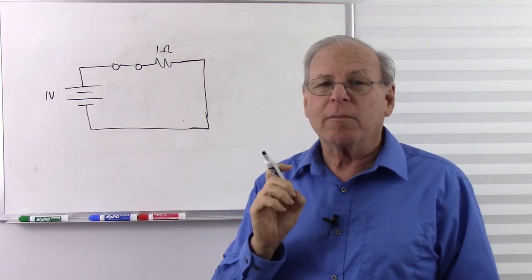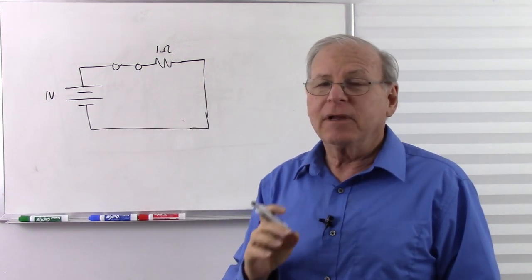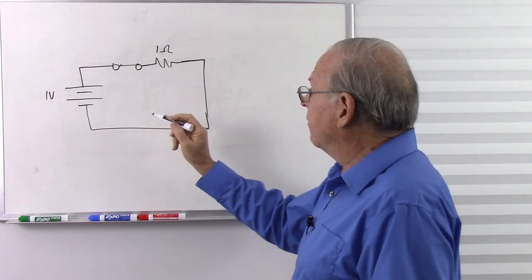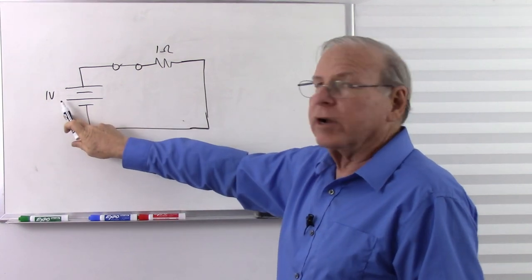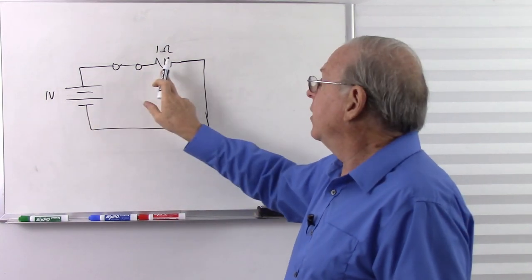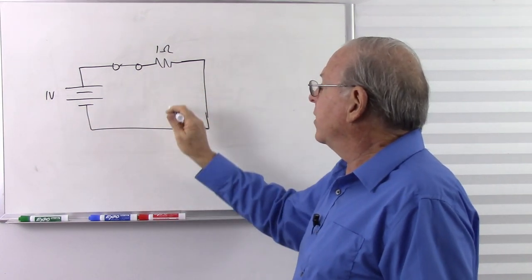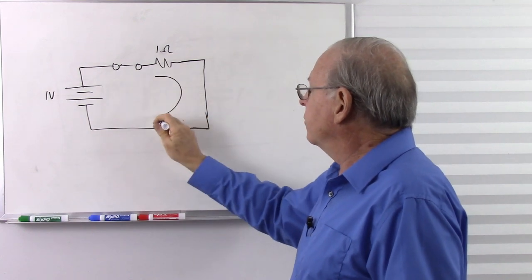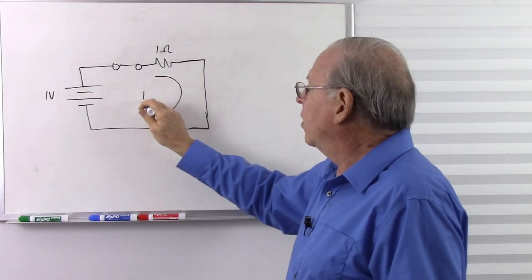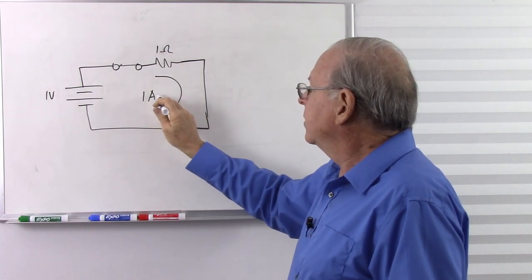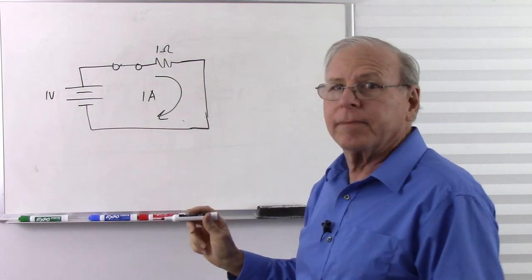At the moment I flip the switch, the capacitor looks like nothing — just a short circuit — and we get a surge of current. How much current? With 1 volt and 1 ohm, we are going to have 1 amp of current flowing through.